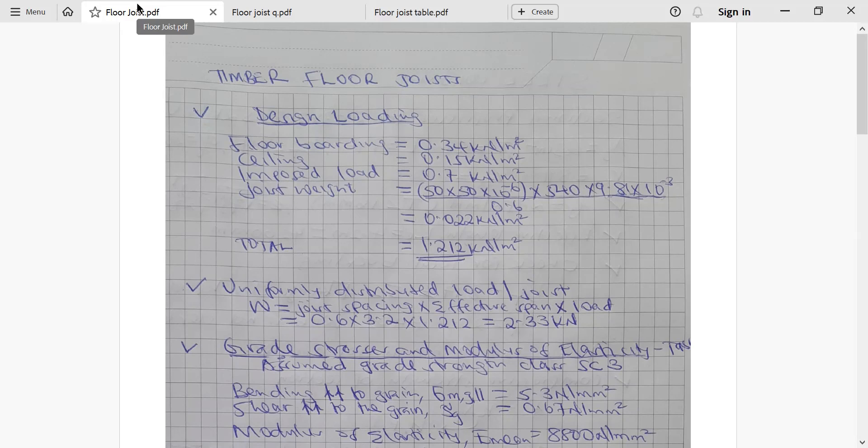For me to compute the joist weight, I will take the cross section area of the joist, and this is the density of the timber, and then I multiply by the gravity divided by the center to center distance, which is 50 by 50 times 10 power negative 6, converted from millimeter squared to meter squared. From there I will add the total. All of them will add up to 1.212 kilonewton per square meter.